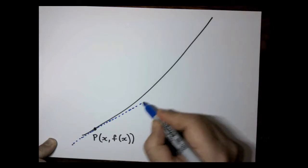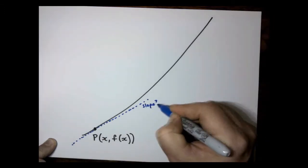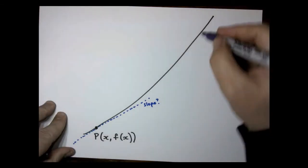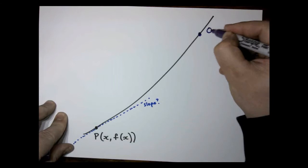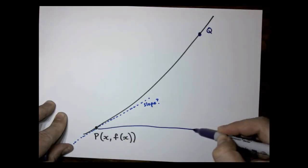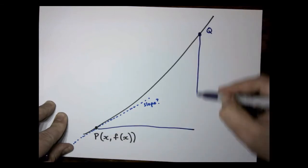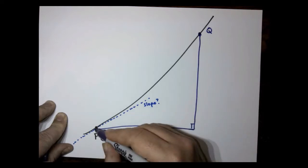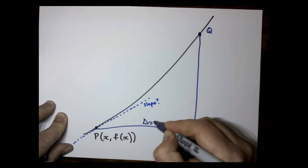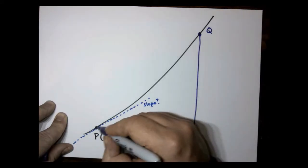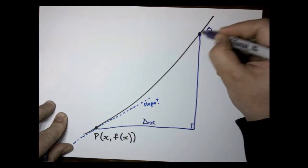Imagine a tangent at this point, and we want to find the slope of this one. And the way we go about it, which is quite clever, is that we choose another point. And we call this Q. Let's say that we move a certain distance along the x-axis.